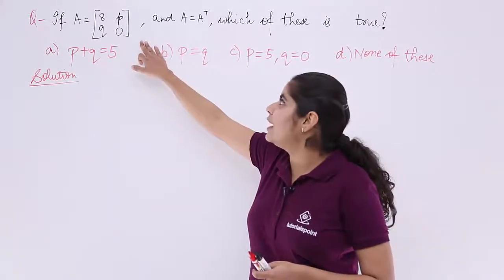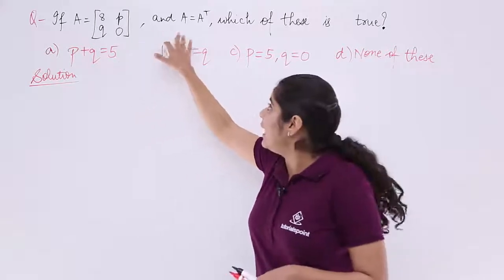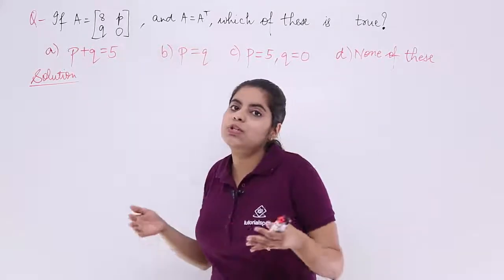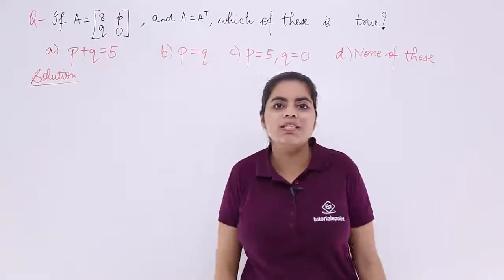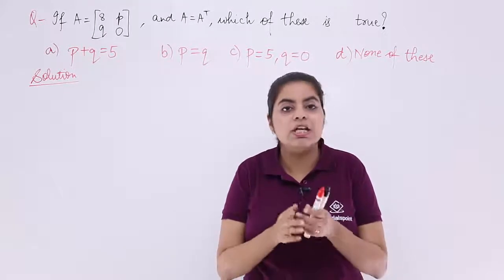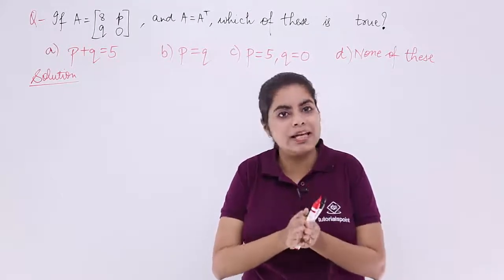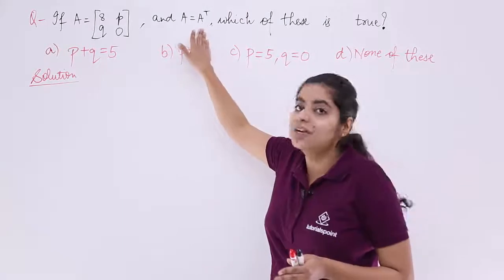The question says that if A is a given matrix and A is equal to A transpose, which of the following options is true. That means you already have a given matrix, you also have a condition that the matrix is equal to its transpose.